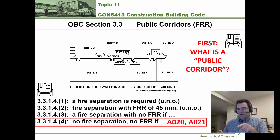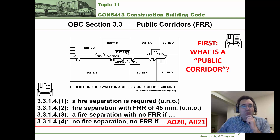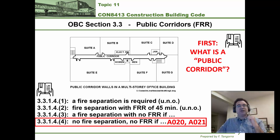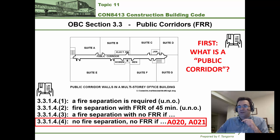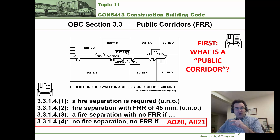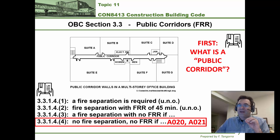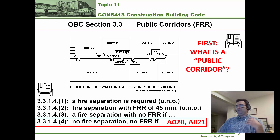This raises an important question: are the walls between the classrooms in the ACE Building's tower portion and the public corridors fire rated? Go check in drawing A020 and drawing A021 whether those public corridor walls are fire rated. It has to do with the distance from anywhere in that room to the nearest fire exit. I would think they would be — but go find out.